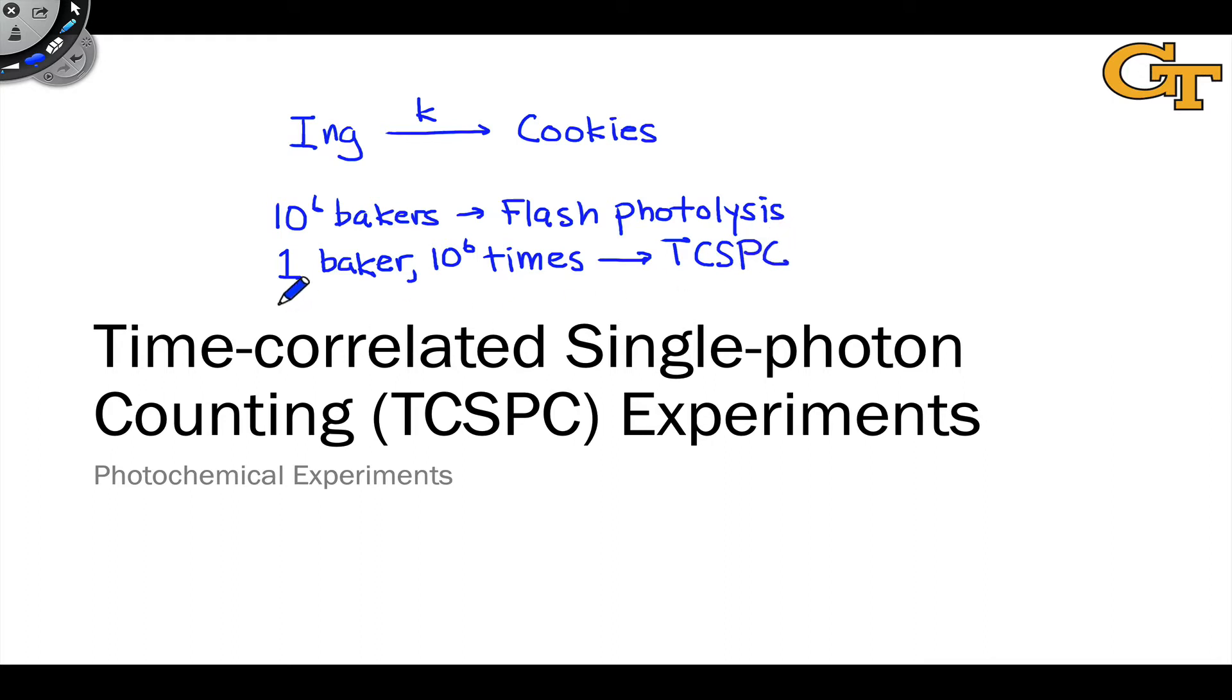The single photon gets at this idea of one baker. We essentially use one photon to excite the sample. Many cycles do not result in photo excitation. And that's necessary to make sure the experiment works. But when we do excite the sample, one molecule gets photo excited. And then we measure the emission of a single photon at some later time point, essentially indicating that the fluorescence process is complete. We've made a batch of cookies, if you will. We measure that time delay between excitation and emission, repeat that millions and millions and millions of times, and generate this histogram of the times to emission, showing the frequency of the times to emission.